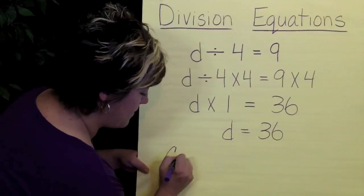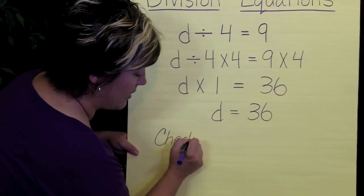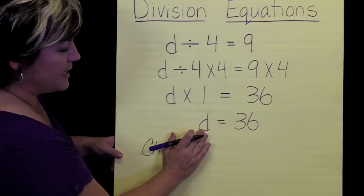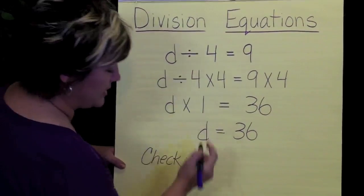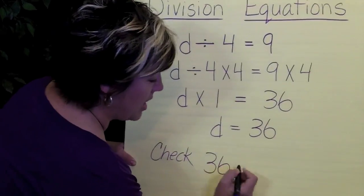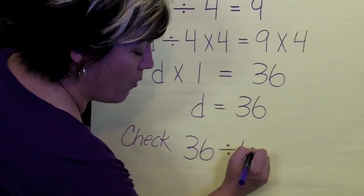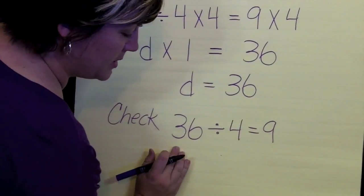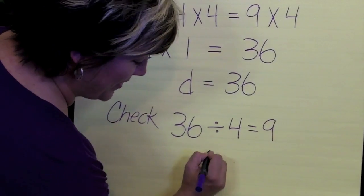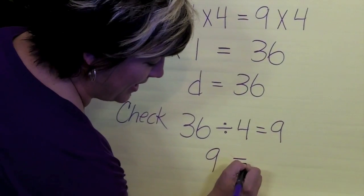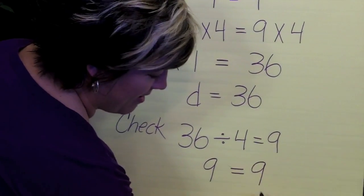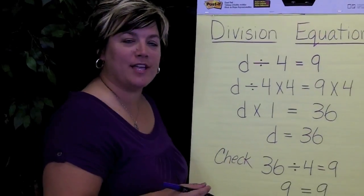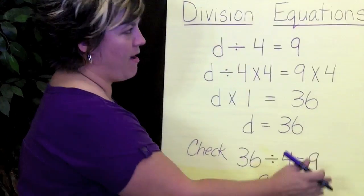Let's do a quick check and see if this works out for us. So instead of d, we're going to put 36. So we have 36 divided by 4 equals 9. And when we do our simple equation, we're going to have 9 equals 9. And so our equation does indeed balance on both sides. We get 9 equals 9.